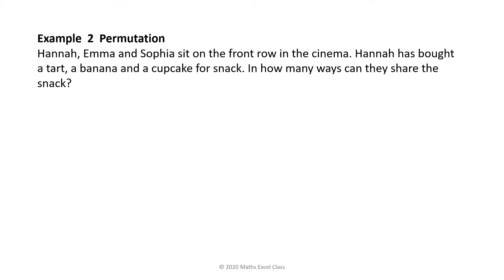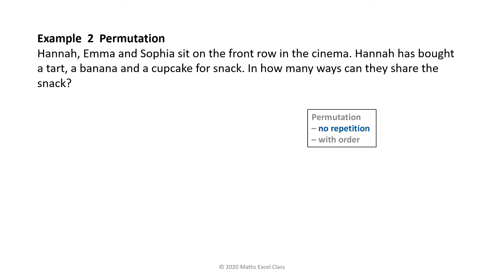Example 2. Hannah, Emma and Sophia sit on the front row in the cinema. Hannah has bought a tart, a banana and a cupcake for a snack. In how many ways can they share the snack? There is only one tart — if Hannah has eaten the tart, Emma cannot choose the tart, so there is no repetition. If Hannah has eaten the tart, it is different from Emma having eaten the tart, so order matters.